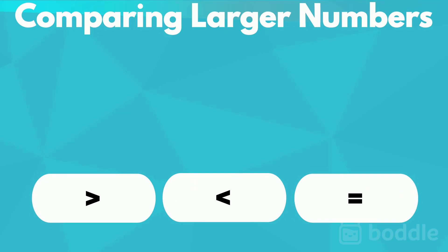Let's look at these larger numbers. Thirty-two and fifteen. Thirty-two has three tens and two ones. Fifteen has one ten and five ones. Since thirty-two has more tens, it's greater than fifteen.